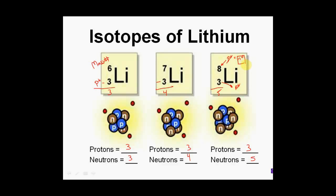So once again: same number of protons, different number of neutrons. All of them are lithium because they have three protons — they just vary in the number of neutrons in the nucleus.